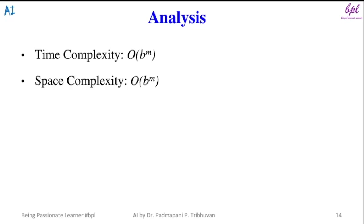Space complexity: The space complexity of best-first search depends on the number of nodes stored in the open and closed list during the search. In the worst case, when all nodes are stored, the space complexity can be order of B to the power M.